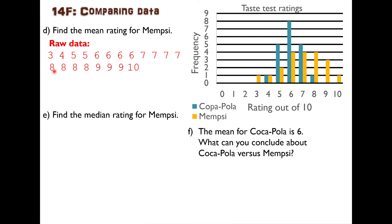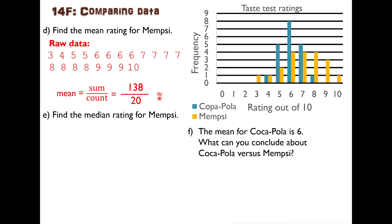To find the mean, remember it is the sum divided by the count. If we add up all of those numbers we get 138, and there are 20 values, so 138 divided by 20 gives approximately 6.9. So the average rating for Mempsi is 6.9, which looks about right — it's in the middle of the Mempsi ratings on the graph.